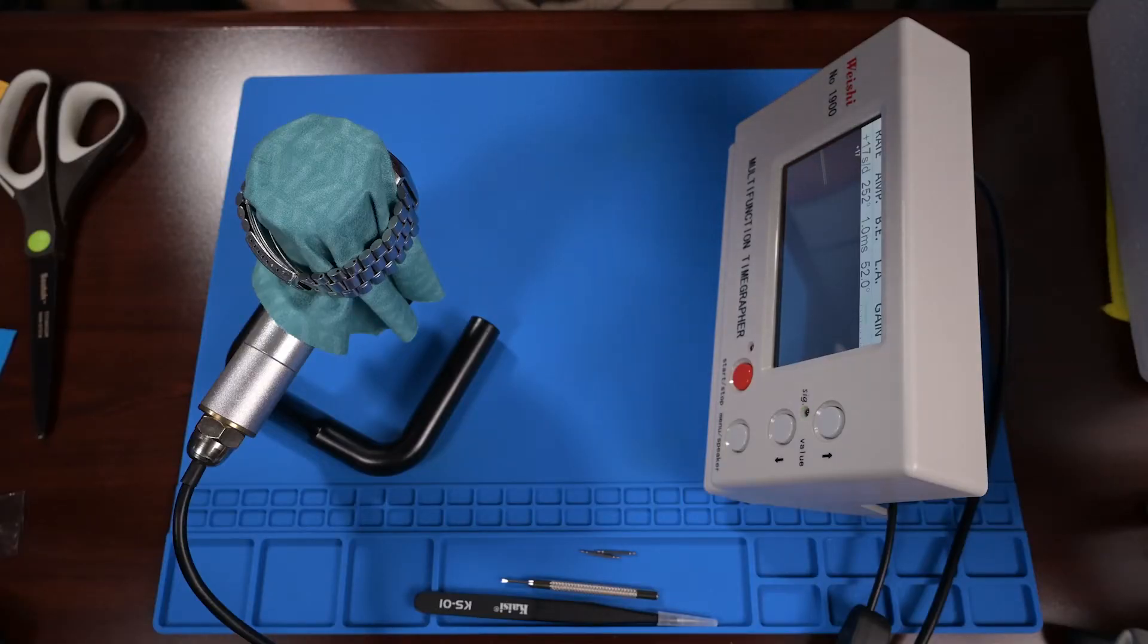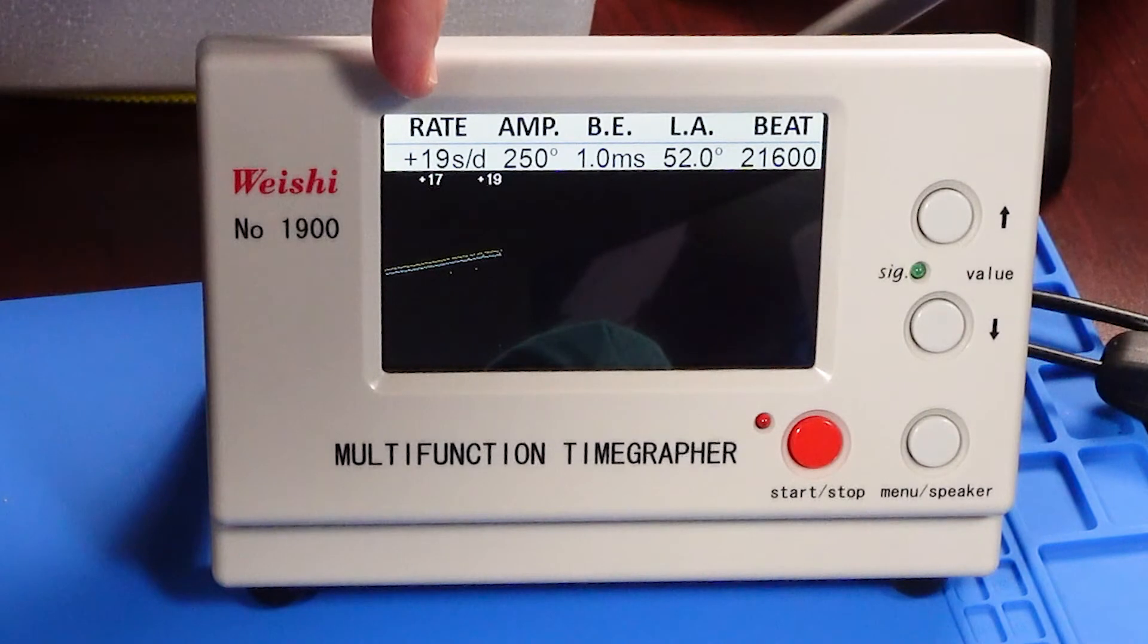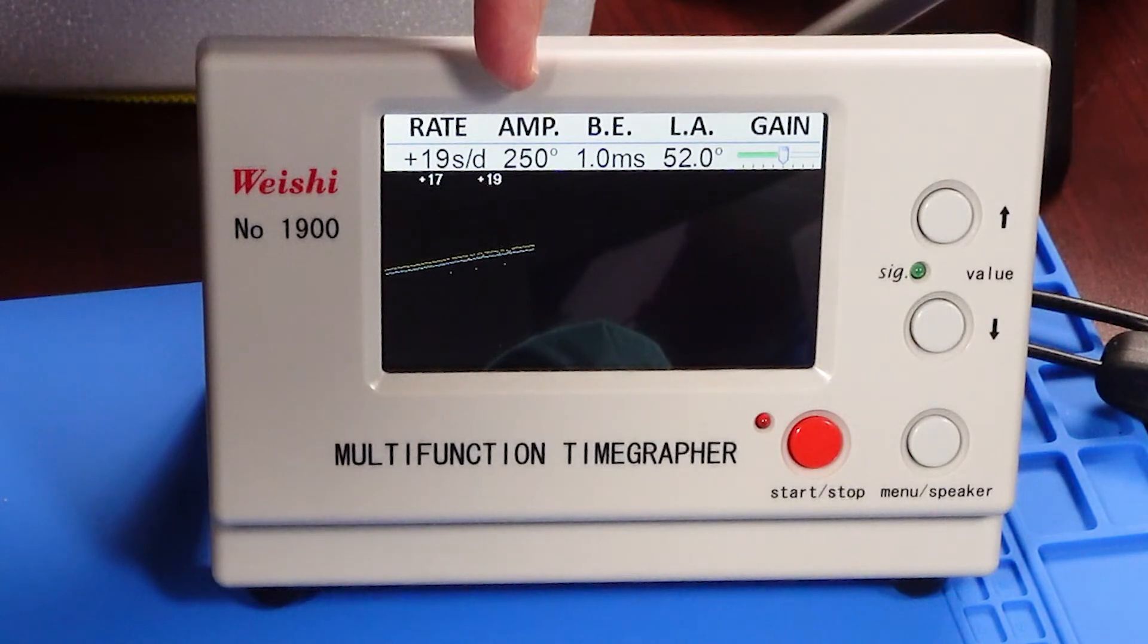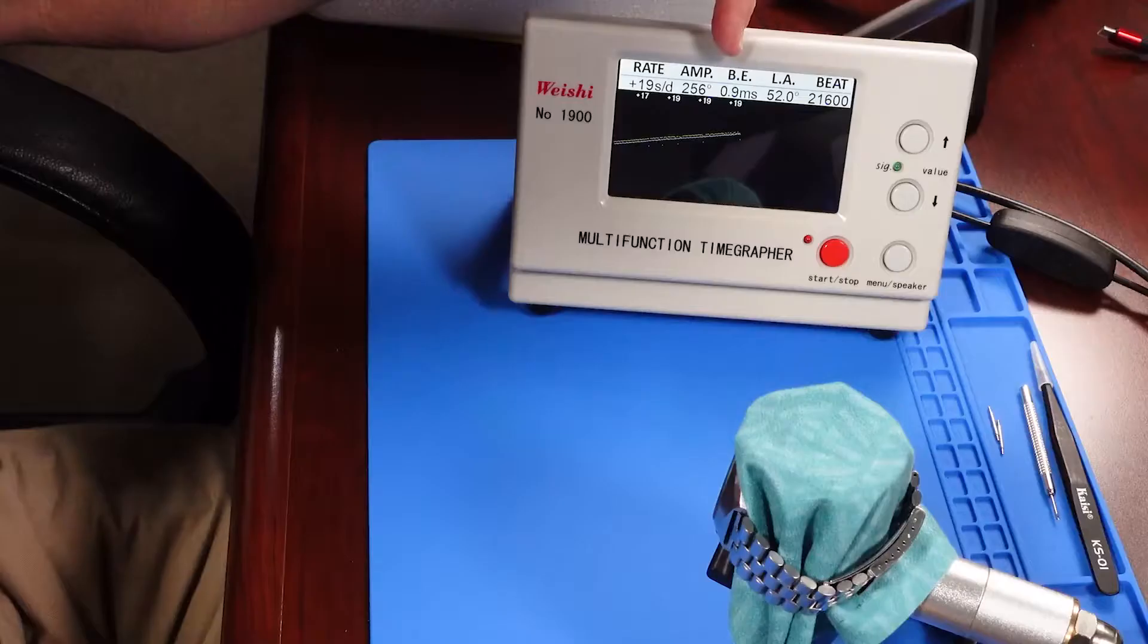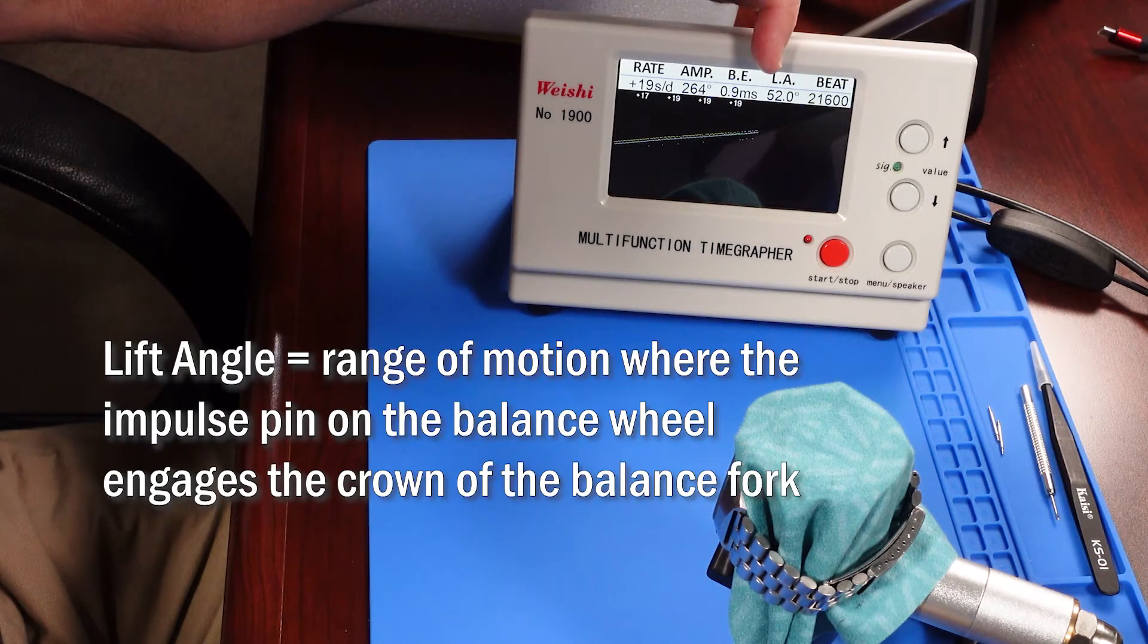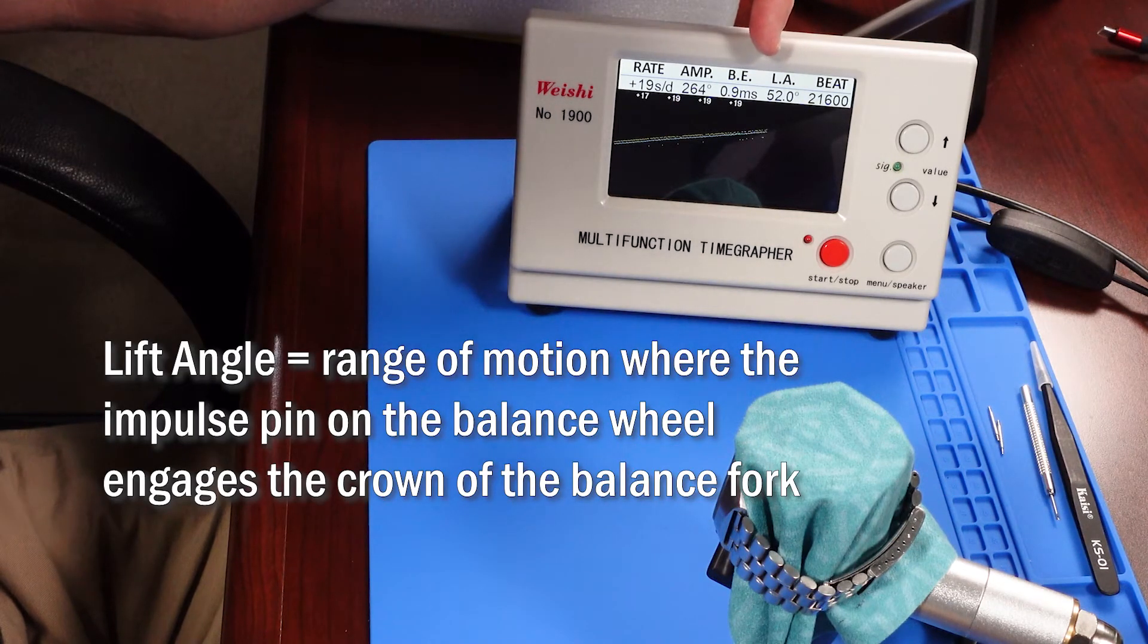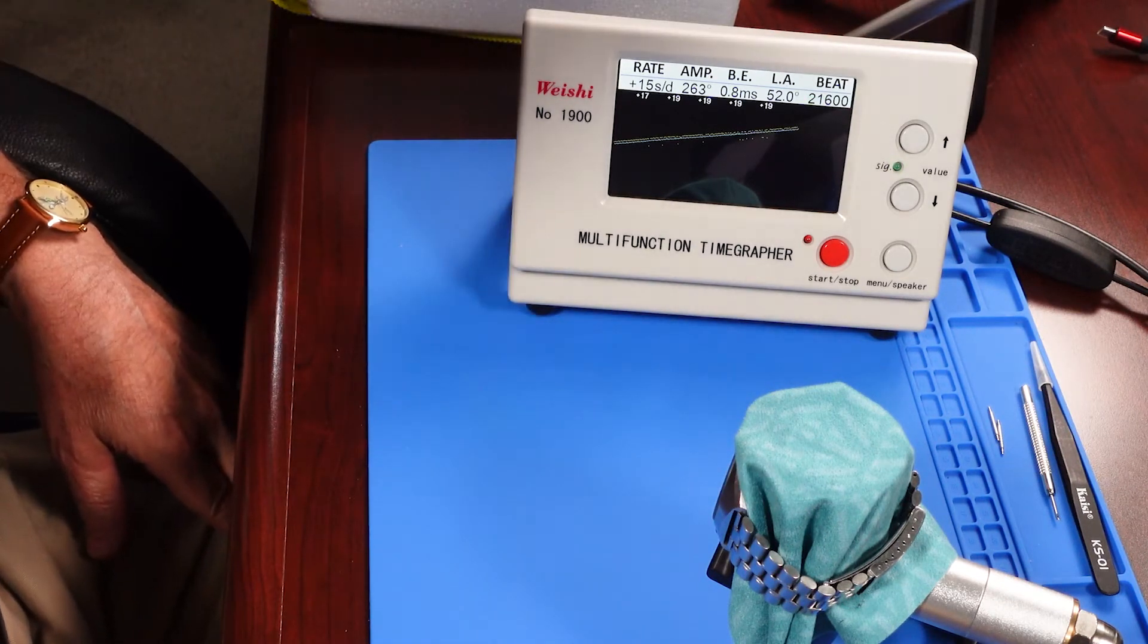And I'm reading the numbers. Okay, so this first number, plus 17 or plus 19 seconds per day - so it's running a little bit fast. That's okay. Amplitude - that's how strong the watch is ticking - and 250, I think that's pretty good. The beat error, 0.9 milliseconds - this is the difference between the tick and the tock, and you want this to be as low as possible. And then this is the angle - I'm not quite sure what that means. And the beats is 21,600. I'll have to look up to see if that's right.